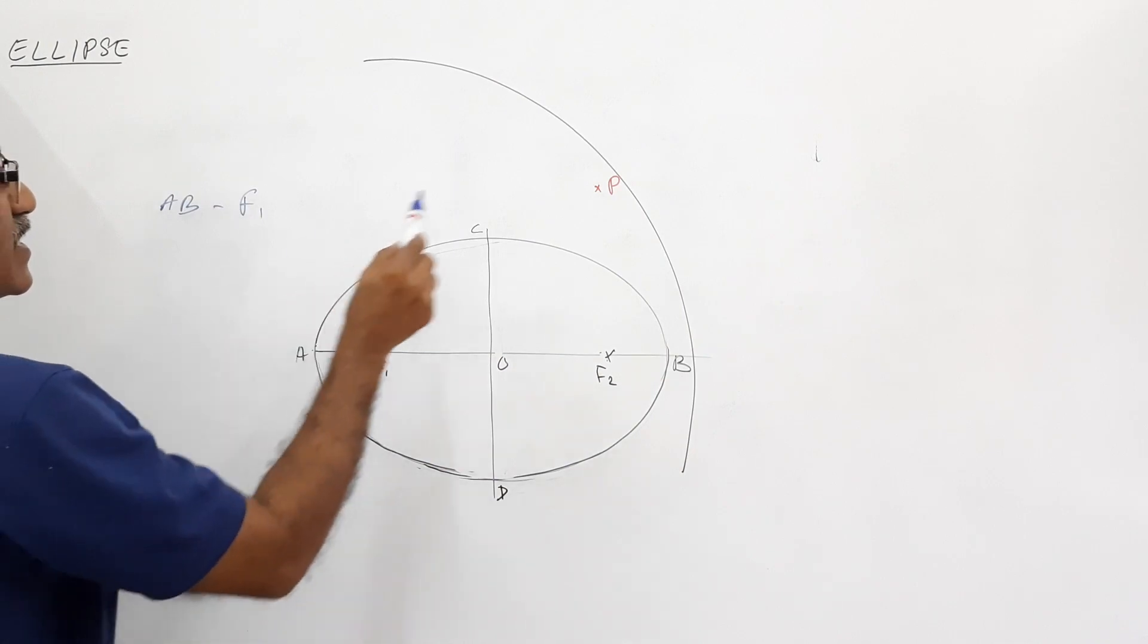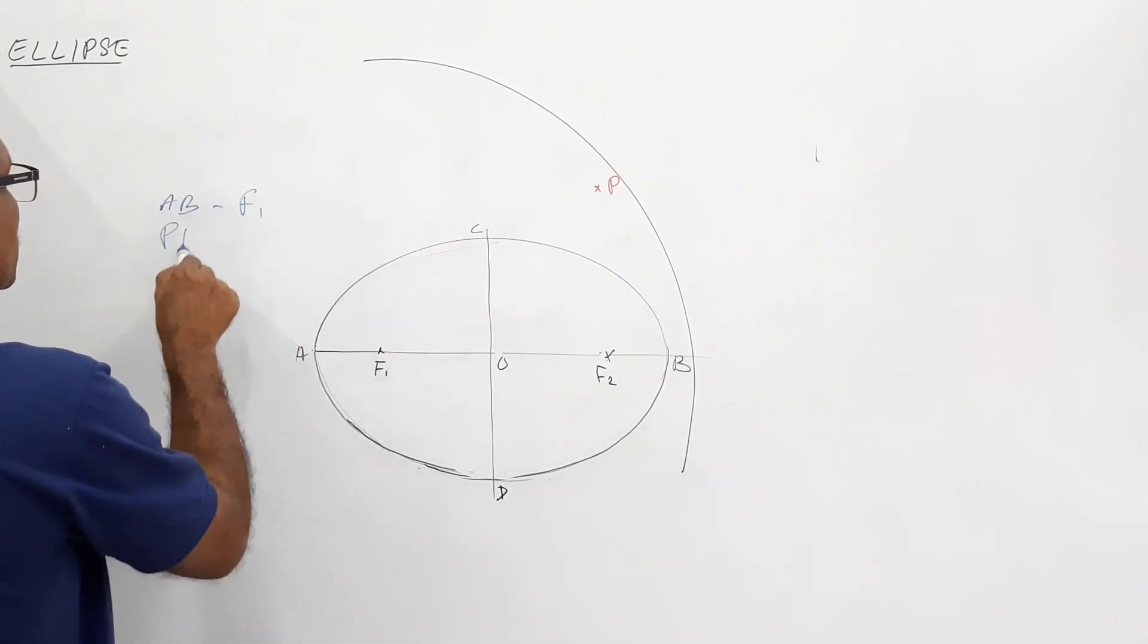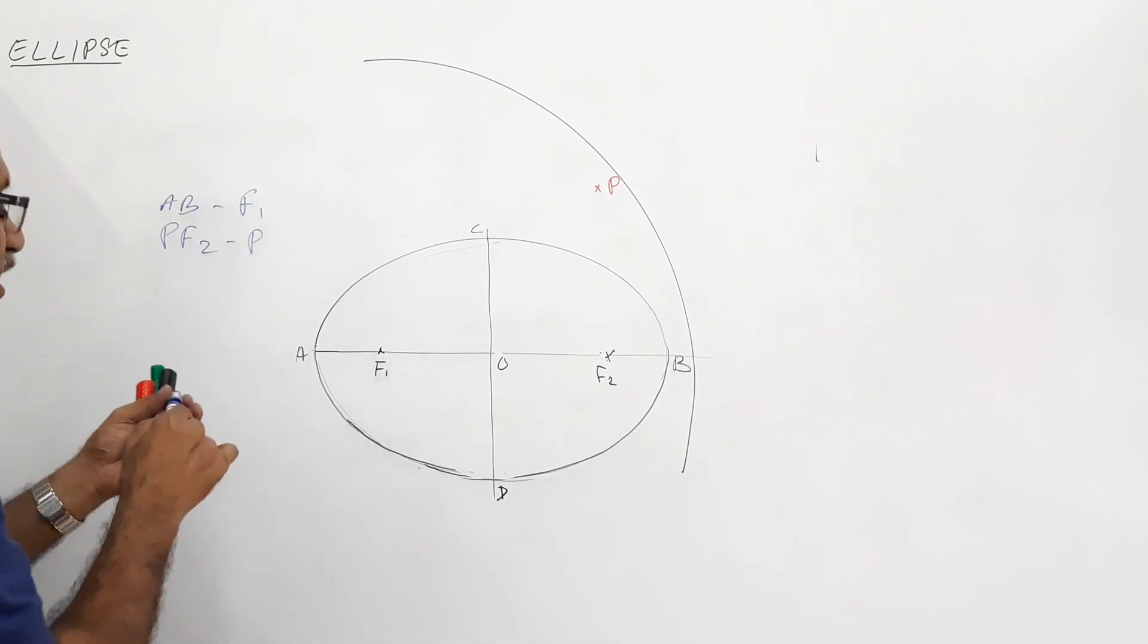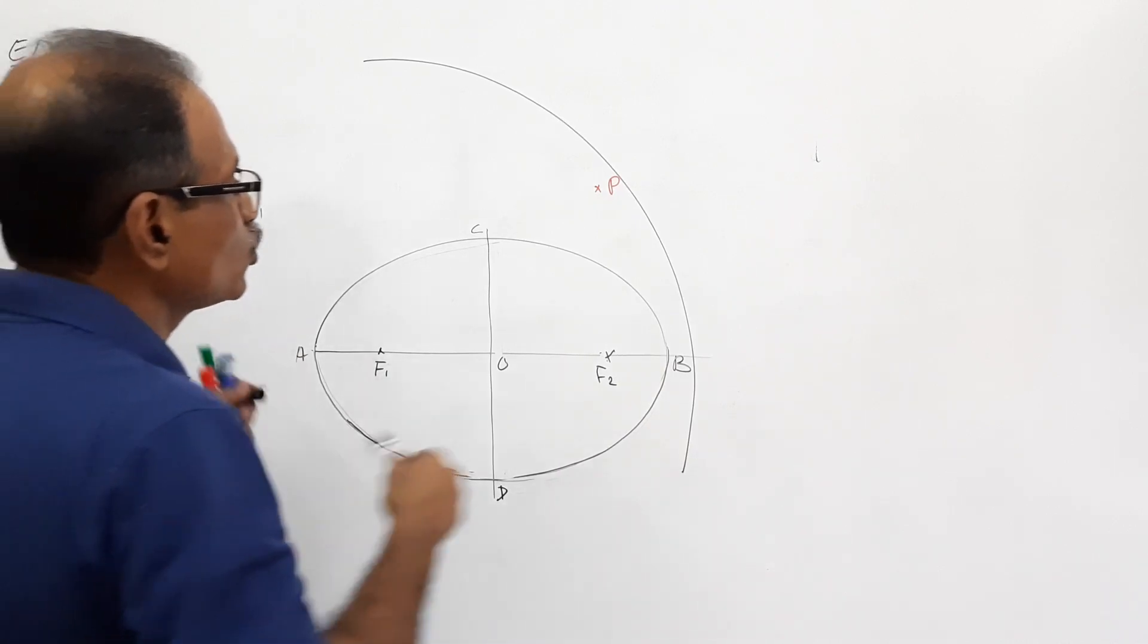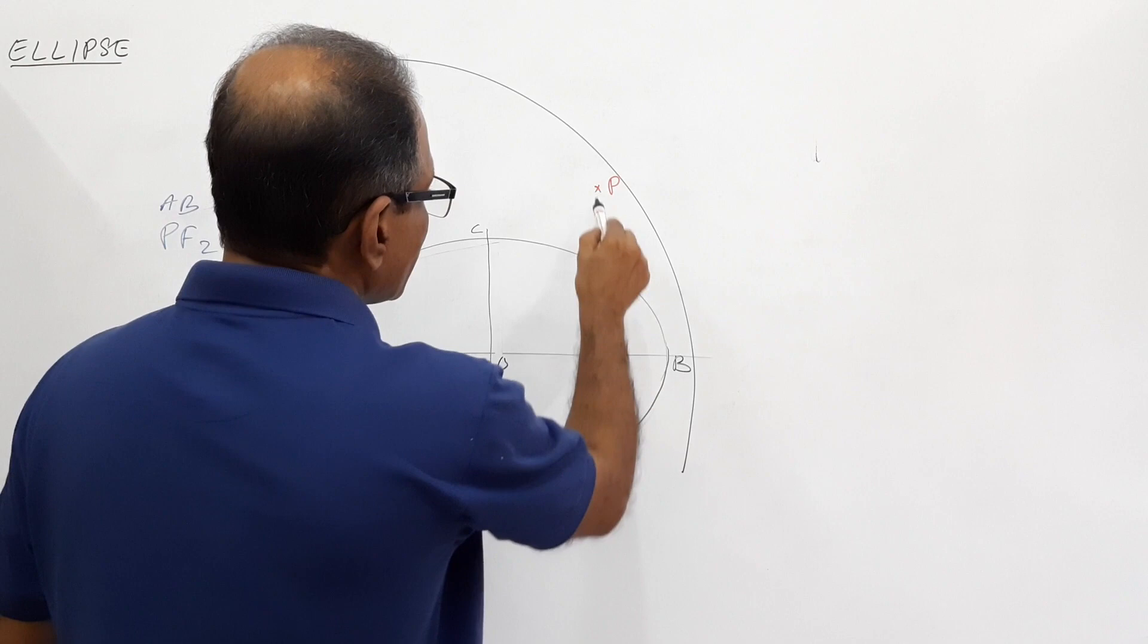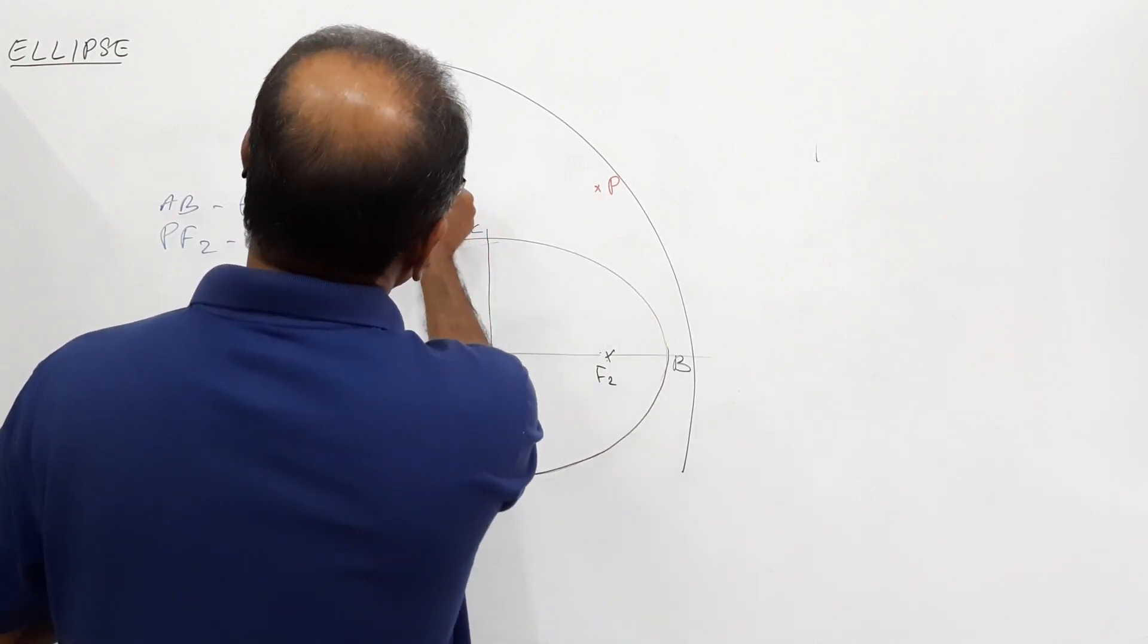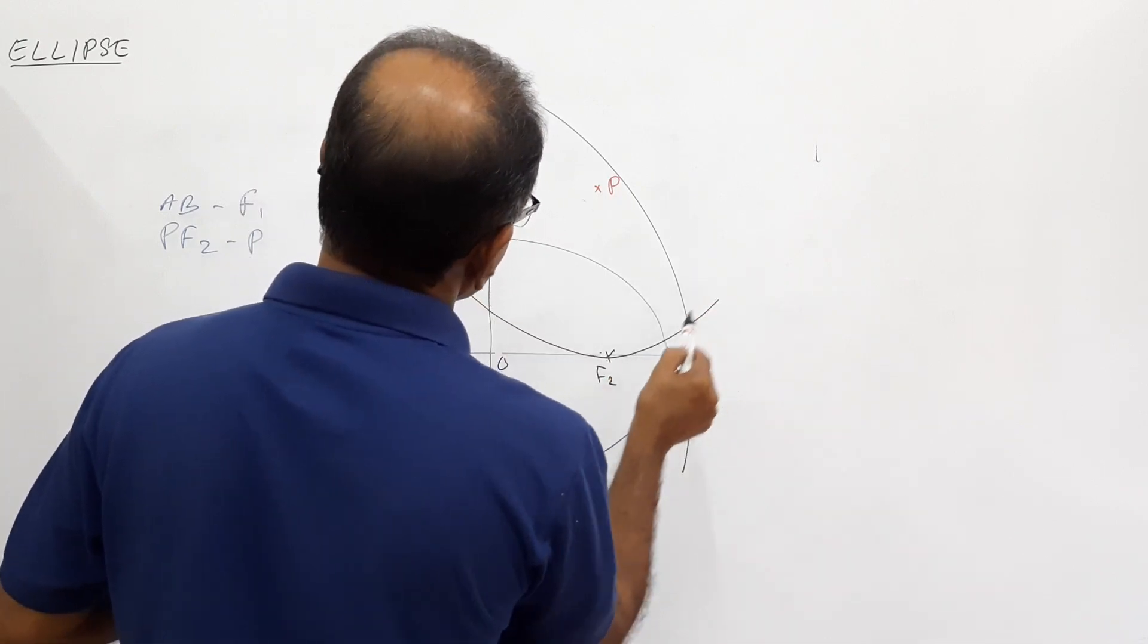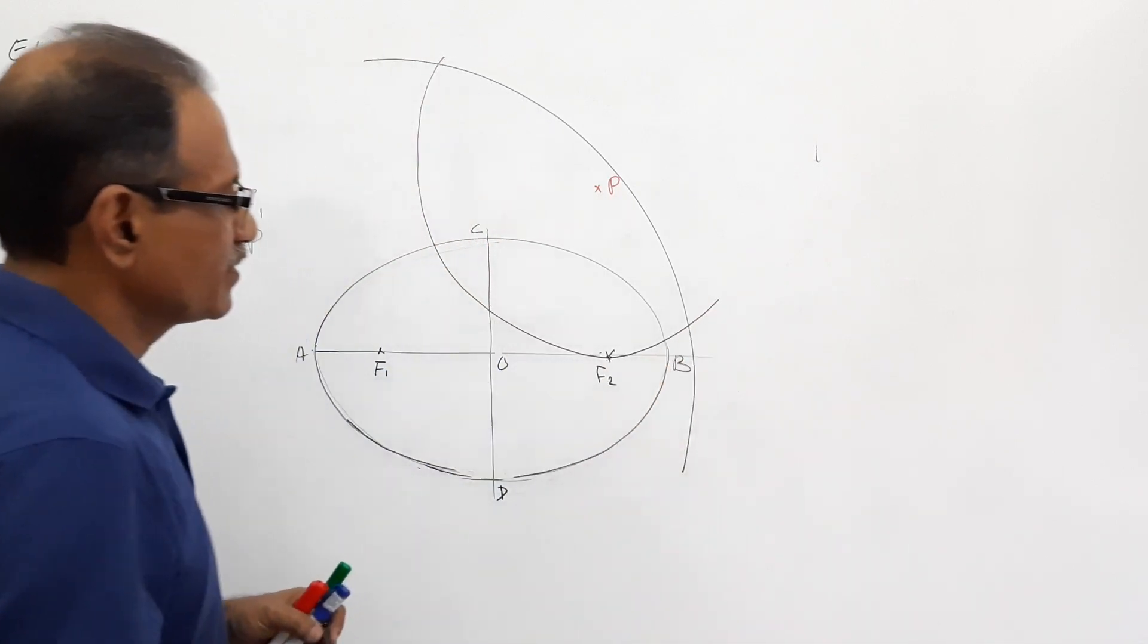Now, take the distance PF2 in your compass, and with P as center, draw another arc. PF2 as radius, P as center, draw another arc. It will pass to F2 naturally.